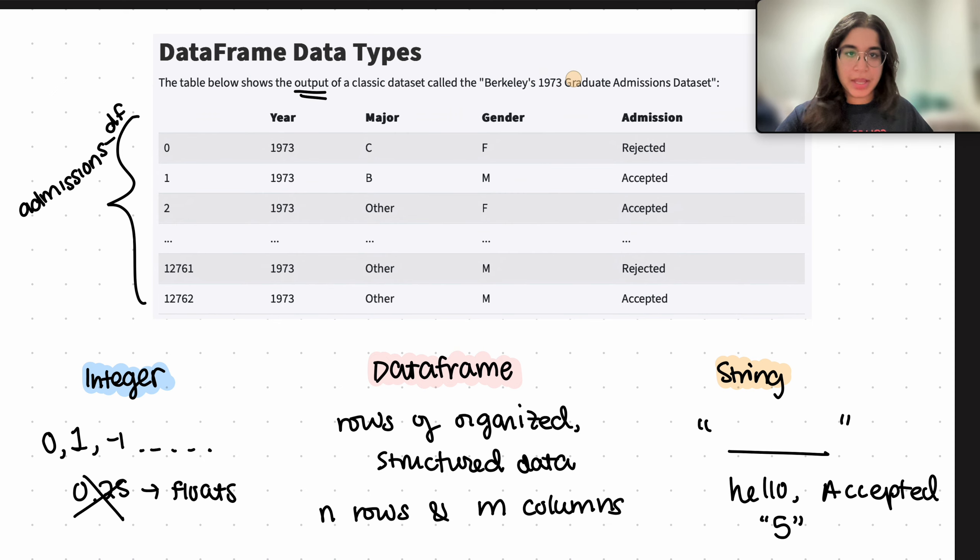All right, so let's go ahead and identify what types of data types we're dealing with here. Let's start with integers first. Remember, integers are these whole numbers. We can see here that the year, the entire year column is composed of integers. So 1973 and other years that may be in the data set, those are all examples of integers.